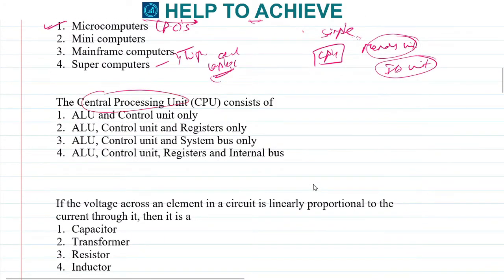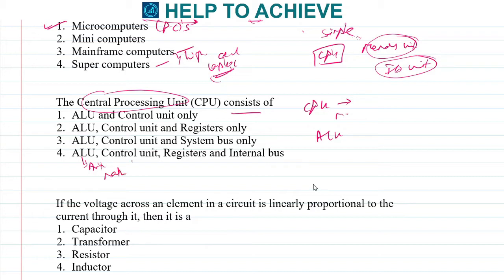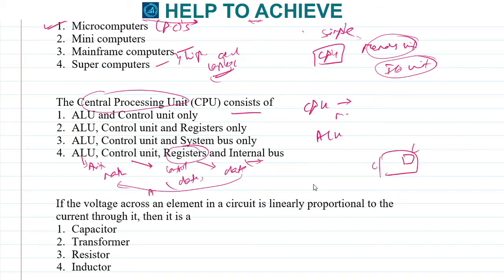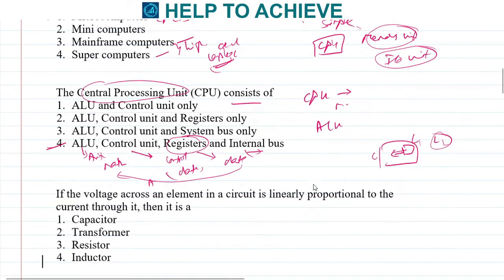Next: what does the central processing unit consist of? In modern processors, the CPU consists of an ALU (arithmetic logic unit) for mathematical operations, a control unit to decide where data should go, registers where data is stored for ALU operations, and an internal bus. There is also built-in cache like L1 and L2 levels. The correct answer is option four: ALU, control unit, registers, and internal bus.